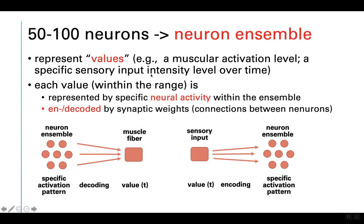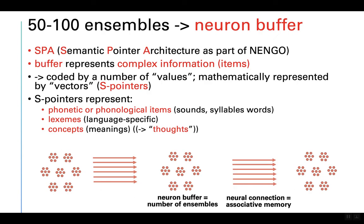Neuron ensembles can represent values — for example, muscle activation levels or sensory input intensity levels. Each value within a specific range is represented by a specific neural activity within the ensemble, and this can be decoded or encoded by specific synaptic weights. Going a step further, we can put together 50 to 100 neuron ensembles, each representing a value, to form a neuron buffer.